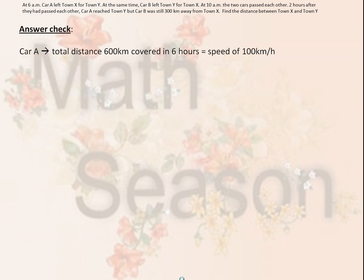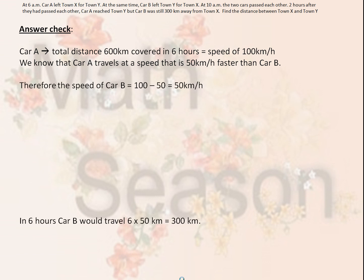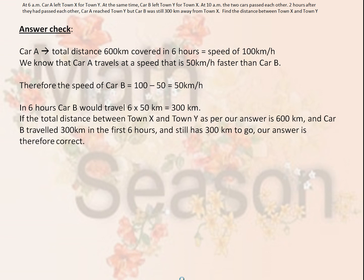Answer check: Car A covered the total distance of 600 kilometers in 6 hours, giving a speed of 100 kilometers per hour. We know that car A travels 50 kilometers per hour faster than car B, so the speed of car B equals 100 minus 50, or 50 kilometers per hour. In 6 hours, car B would travel 6 times 50, equal to 300 kilometers. If the total distance is 600 kilometers and car B traveled 300 kilometers in the first 6 hours and still has 300 kilometers to go, our answer is therefore correct.